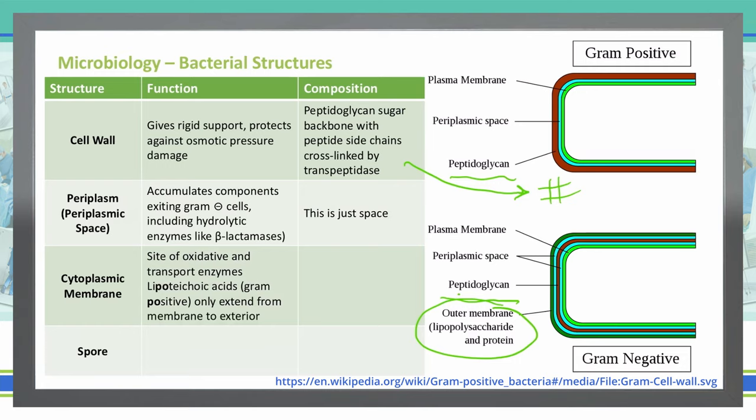The cytoplasmic membrane is a location where we see oxidative and transport enzymes, like lipoteichoic acid, only in gram-positives. These oxidative and transport enzymes extend from the membrane to the exterior only. This is a phospholipid bilayer that has embedded proteins in it.